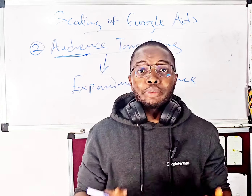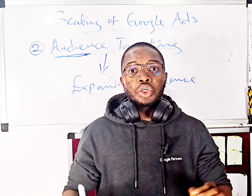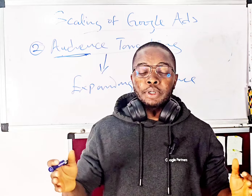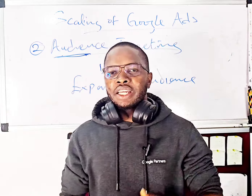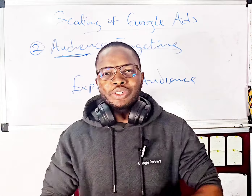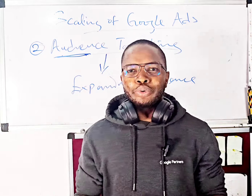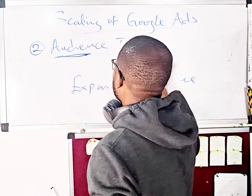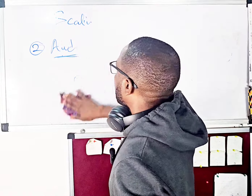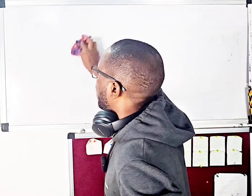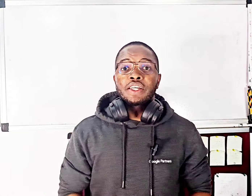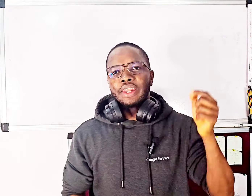So far I've talked about scaling by location — creating new campaigns to target each location giving you the best results — and scaling with different sets of audiences. Now we want to talk about scaling with different types of campaigns available on Google Ads. Let's say you start advertising on Google using a Search campaign to deliver your message to audiences on Google Search and you start getting some results.